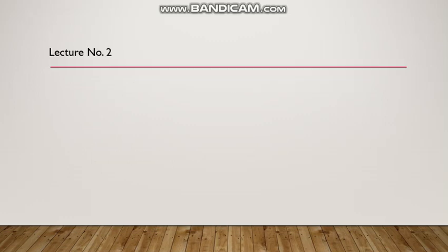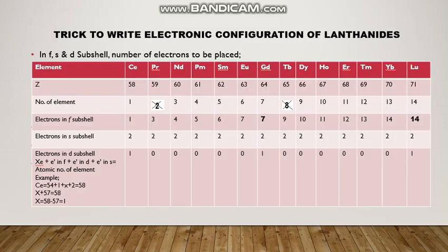In this lecture, we first start with the trick to write the electronic configuration of lanthanides. As you know, the electronic configuration of lanthanides is written in the sequence 4F, then 5D, then 6S.